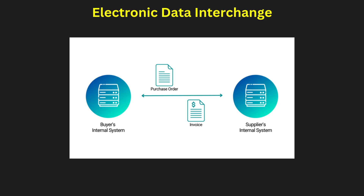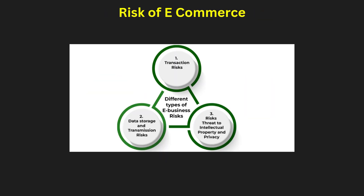Electronic Data Interchange (EDI) is the electronic exchange of business documents between organizations. It replaces traditional paper-based communication with digital messages, improving speed and accuracy. EDI systems use standard protocols like UN/EDIFACT and X12 to ensure seamless data transfer. This system is crucial in industries where timely and accurate information exchange is vital, such as manufacturing, retail, and logistics. Data encryption methods such as DES and RSA ensure that sensitive information remains protected during transmission.